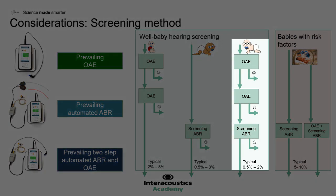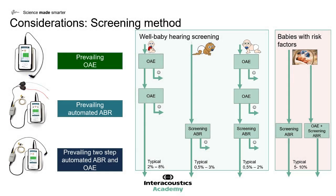Looking at the two-step automated ABR and OAE method: babies are typically screened using otoacoustic emissions first, then otoacoustic emissions second, and then if they continue to fail or refer, they are screened with automated ABR. Referral rates in this pathway are typically between 0.5% and 2%.